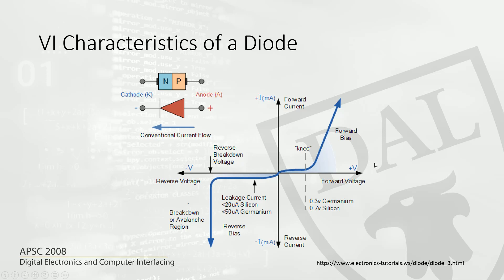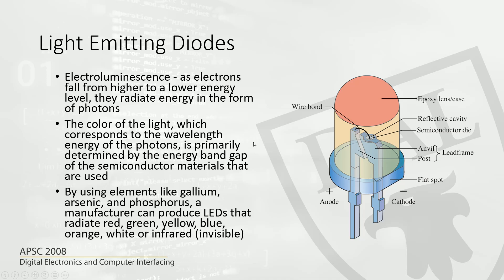Here is the VI characteristics curve. We often use silicon diodes, which is why the threshold is 0.7V — the point at which the depletion region becomes negligible. For germanium diodes it is 0.3V, though germanium diodes are rarely used. In reverse bias, a very small leakage current flows for a long time, and it takes around negative 40 volts for breakdown to occur.